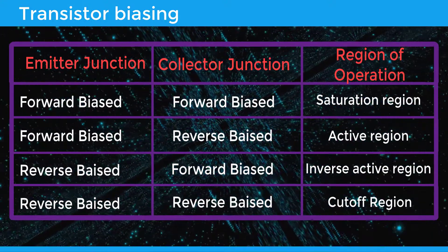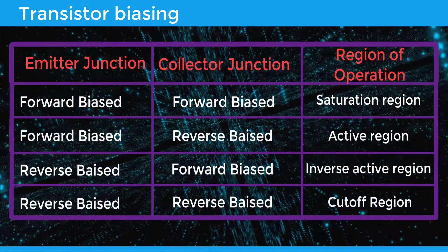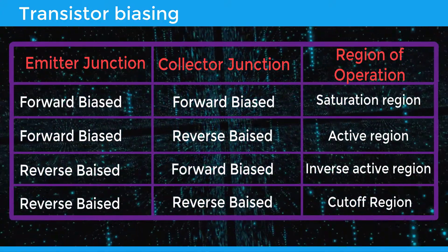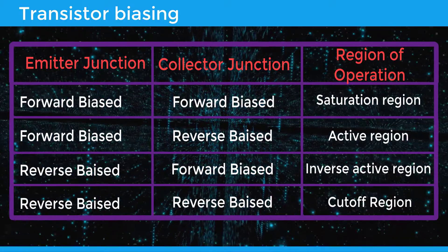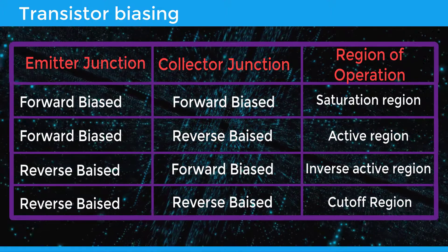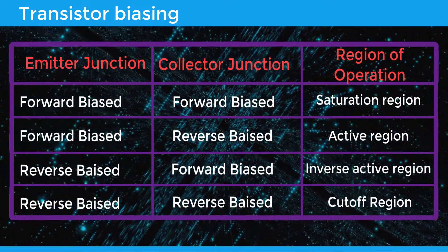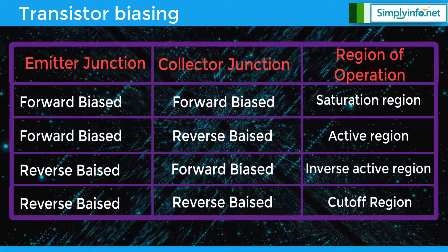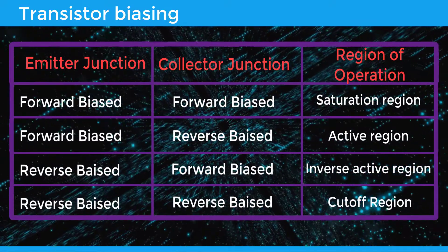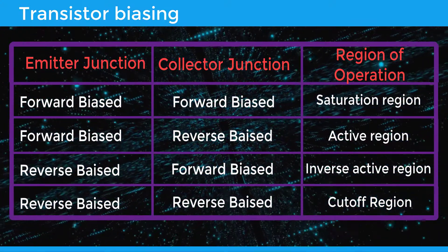When the emitter junction is forward biased and the collector junction is forward biased, the region of operation is saturation. When the emitter junction is forward biased and the collector is reverse biased, the region of operation is the active region. When the emitter is reverse biased and the collector is forward biased, it is the inverse active region. When both the emitter and collector are reverse biased, the region of operation is the cutoff region.